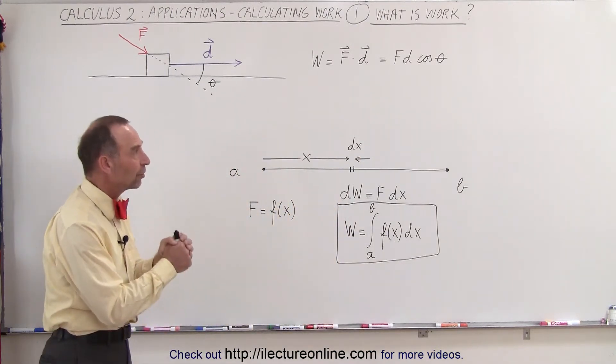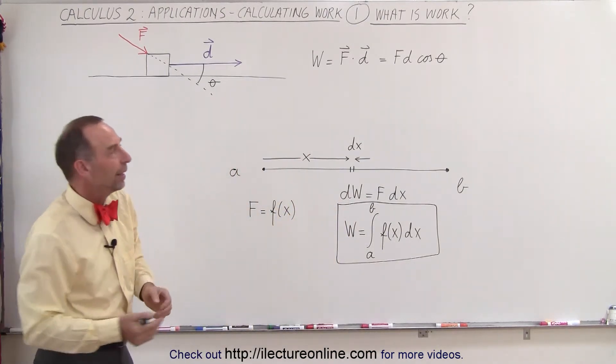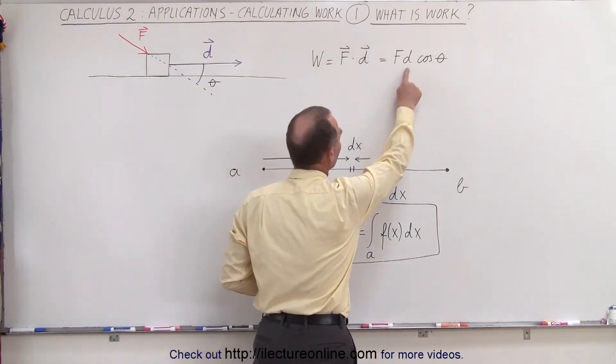Notice when the angle between them becomes zero, the cosine of zero is one and it simply becomes the product of the force times the distance.